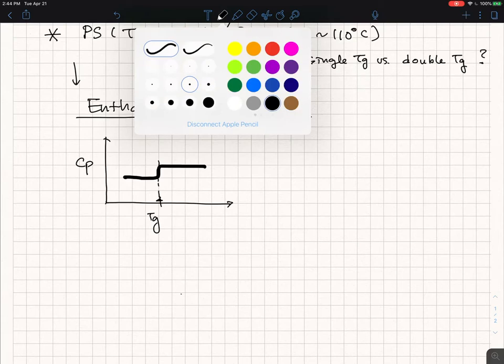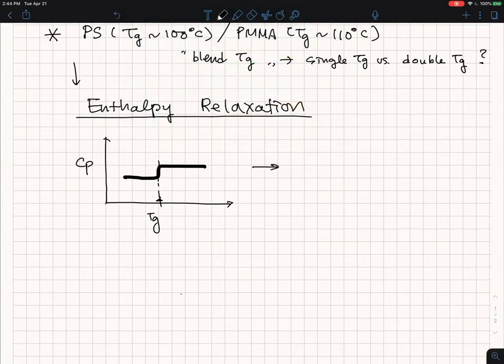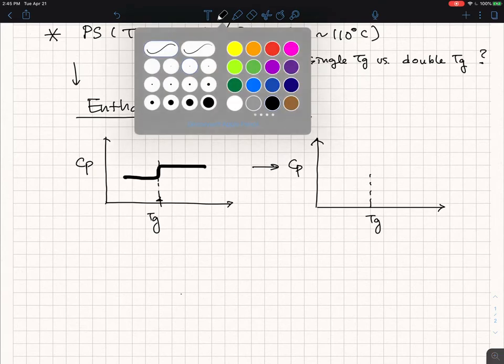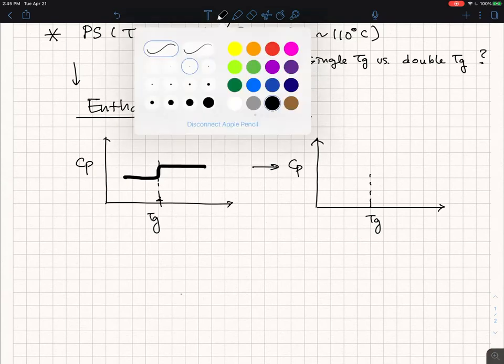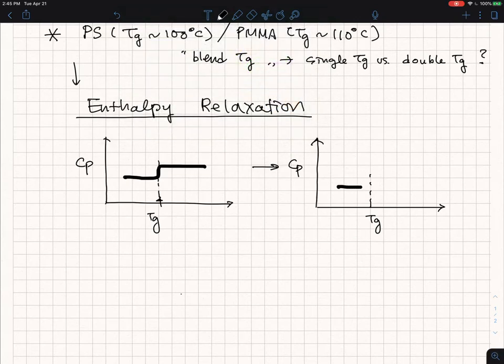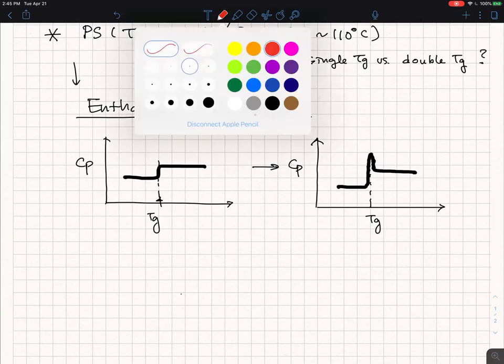But now, I am going to show you the case. Actually, this experiment is also clearly shown by Bernie Wunderlich when he was at RPI. So if I draw this, the same CP for the same polymer sample, and this is TG, sometimes you should be able to make the sample just looks like this.